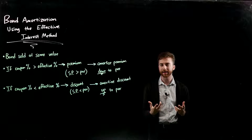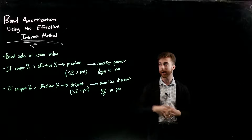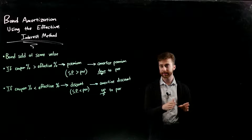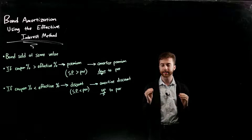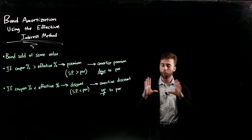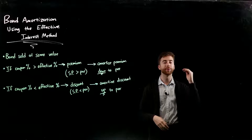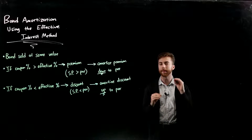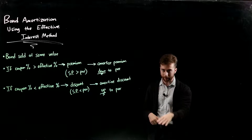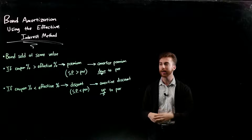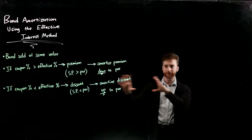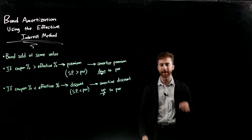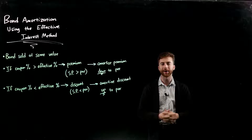Based on the relationship between your coupon and your effective percent, it decides whether it's a premium or a discount. The premium or discount — the difference between that selling value and the par value — is the amount of the premium or discount. If it's a premium, you amortize it down to par; if it's a discount, you amortize it up to par. One very popular way of doing that is the effective interest method. So we're going to segue into one big example now.